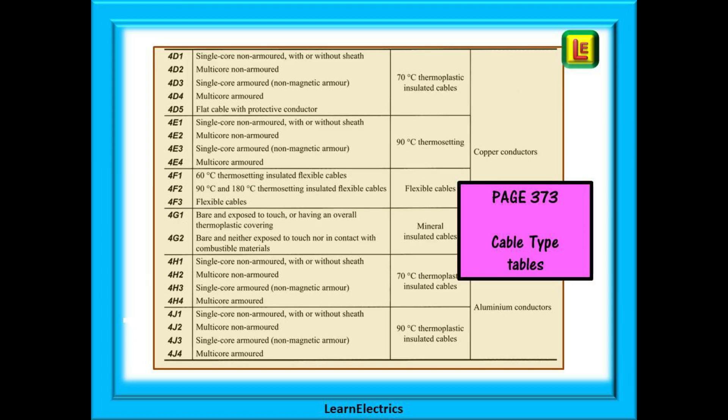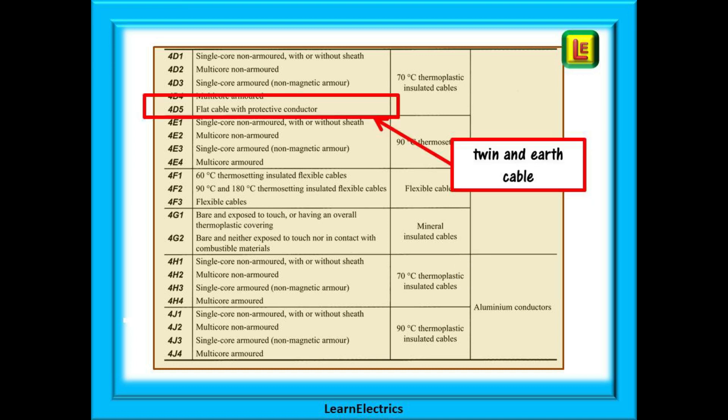Also on page 373 are data tables for the more popular cable types. Highlighted here is table 4D5 for twin and earth cable called flat cable with protective conductor in the book. You will use this table a lot. Get used to finding it easily. It is on page 409. Commit the page number to memory if you need to.